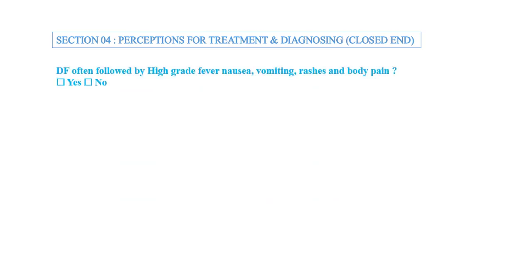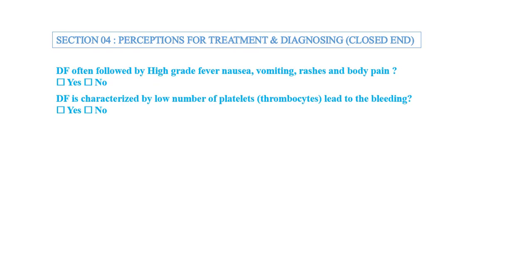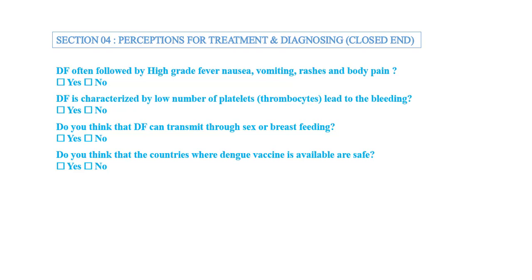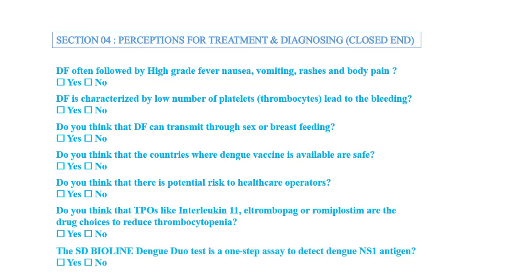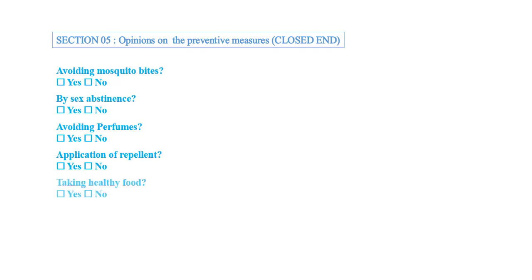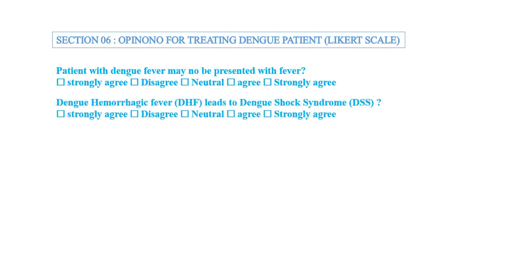In section four, you are more specific about your topic by assessing knowledge and taking opinions with closed-ended questions. For example, question five reads: 'Do you think that TPOs like interleukin-11 and thrombopoietin mimetics are the only drugs of choice to reduce thrombocytopenia?' In section five, we ask about prevention of dengue with closed-ended questions — like avoiding mosquito bites — and take the doctor's opinion about prevention.